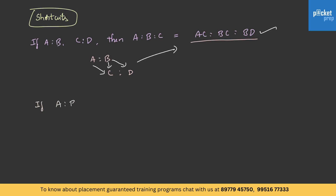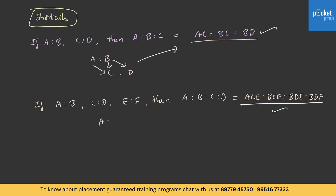In another case, if there are three ratios given — A is to B, C is to D, and E is to F — then to find A is to B is to C is to D, the result is A·C·E is to B·C·E is to B·D·E is to B·D·F. The trick: A·C·E is the first term, B·C·E is the second, B·D·E is the third, and B·D·F is the fourth.